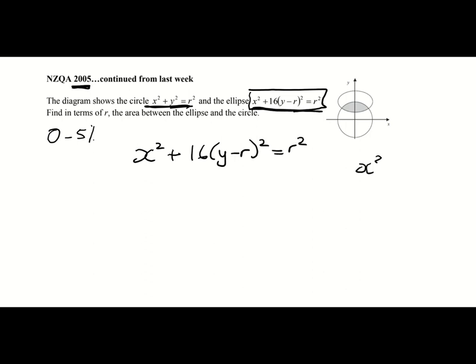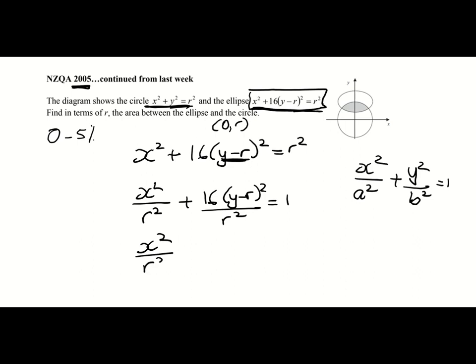We've got x² + 16(y - r)² = r². We know that our general ellipse form is x²/a² + y²/b² = 1. This is for an ellipse centered at the origin, and you can see already that ours is not. Ours is centered up at (0,r). So we have x²/r² + (y-r)²/(r²/16) = 1.